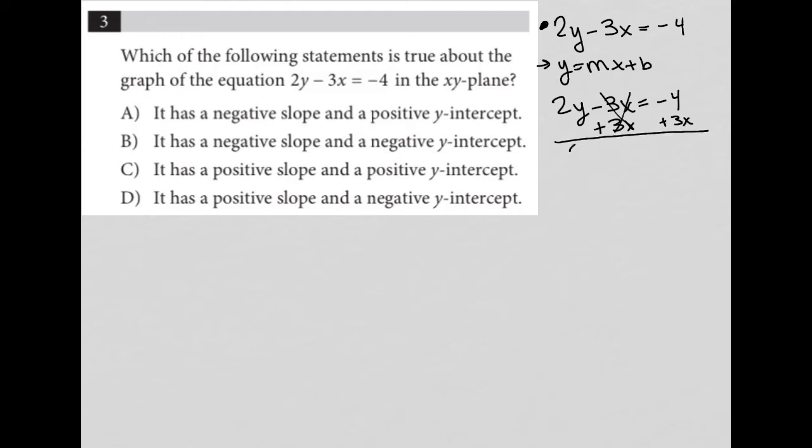That removes it from there, leaving me with just a 2y on the left-hand side. And then I'd have my positive 3x and minus 4 on the right-hand side. Lastly, I'm dividing everything by 2 to isolate y fully. And now I have 3 halves x and negative 4 divided by 2, which is minus 2.